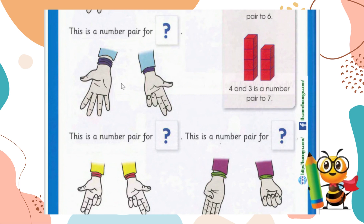Counting all together: one, two, three, four, five, six, seven, eight. This is a number pair for eight. One hand has five and the other hand has three — five and three makes a number pair of eight. Five plus three is eight, so we can say five and three is a number pair for eight.